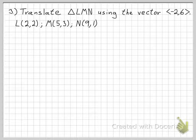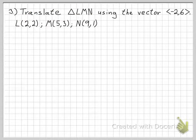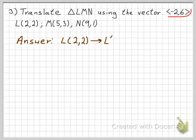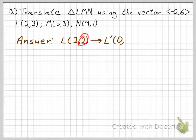Here's the last problem. Translate triangle LMN using the vector ⟨−2, 6⟩. The vertices are L(2,2), M(5,3), and N(9,1). Let's work on this step by step. For L(2,2): the x-coordinate is 2 plus (−2), which gives 0. And the y-coordinate is 2 plus 6, which is 8. So L prime is (0,8).